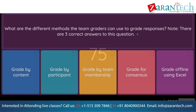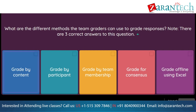Question: What are the different methods the team graders can use to grade responses? Note, there are three correct answers to this question. Option 1: grade by content. Option 2: grade by participant. Option 3: grade by team membership. Option 4: grade for consensus. Option 5: grade offline using Excel.